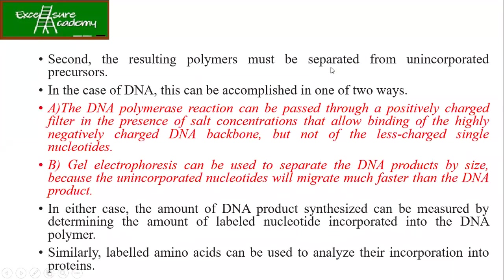Second, the resulting polymers must be separated from the unincorporated precursor. So finally, what you can do is pass through a positively charged filter. Now, why positively charged? Because your DNA is negatively charged — toh usko bind karne ke liye we are going to use a positively charged filter — that too in the presence of salt concentration which will allow binding of the highly negatively charged DNA backbone. Or you can use gel electrophoresis, which can also be used to separate the DNA products.